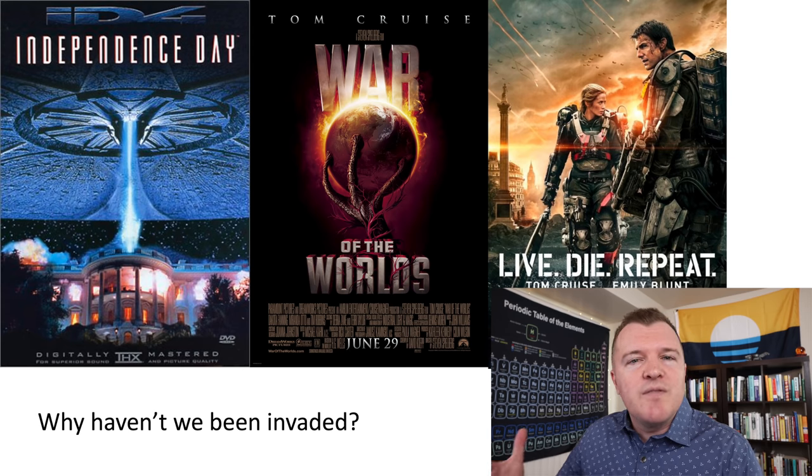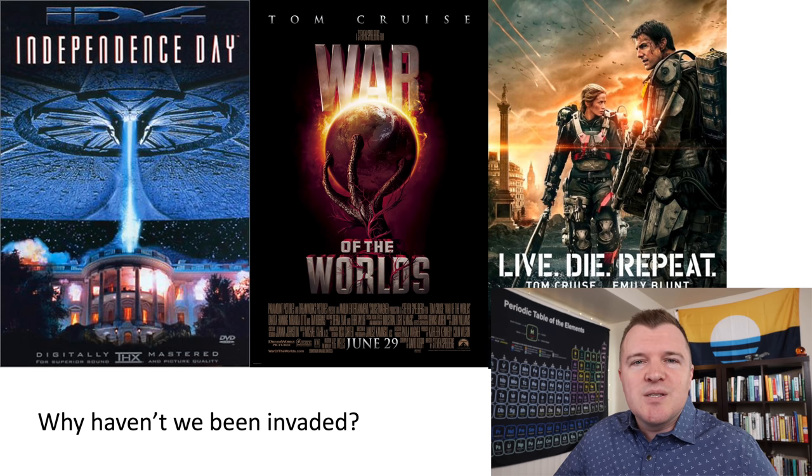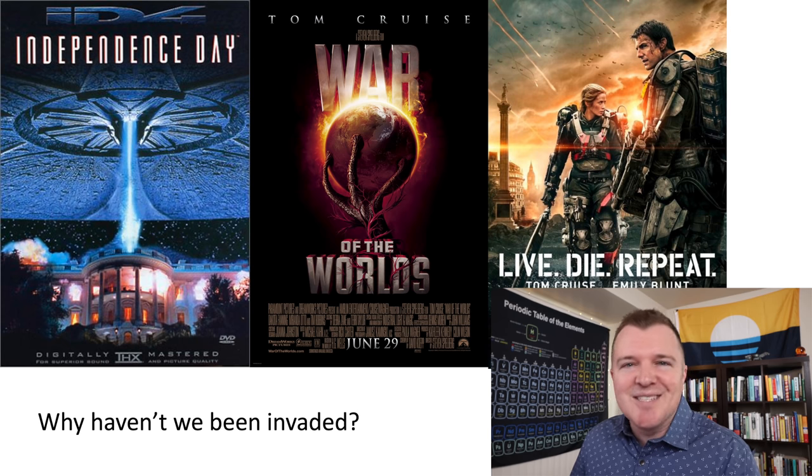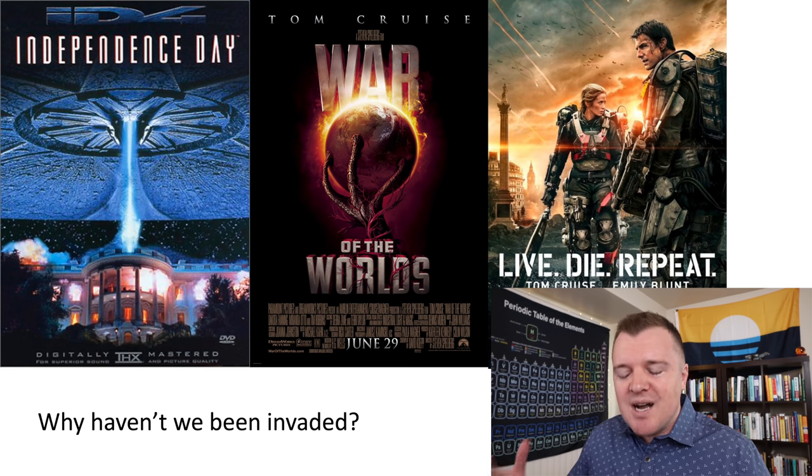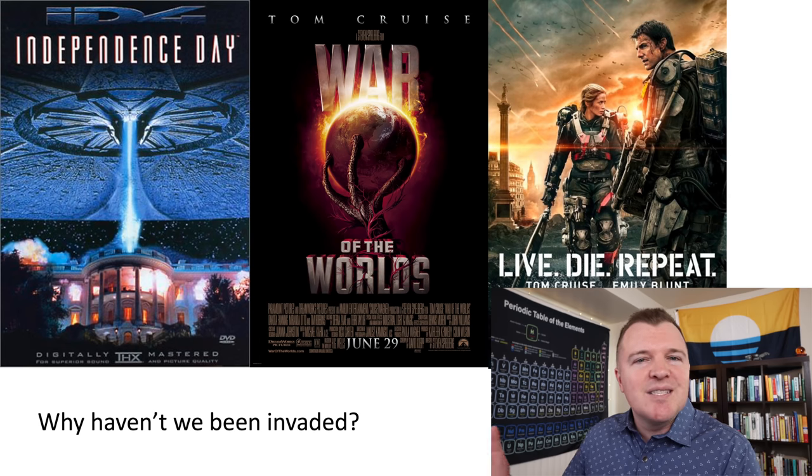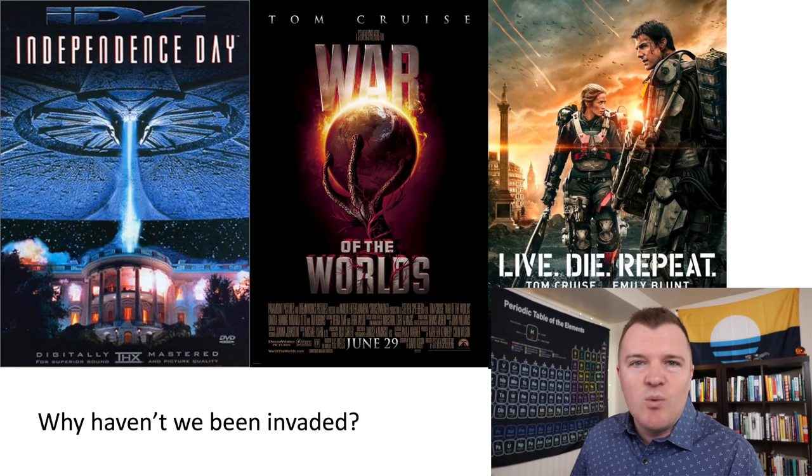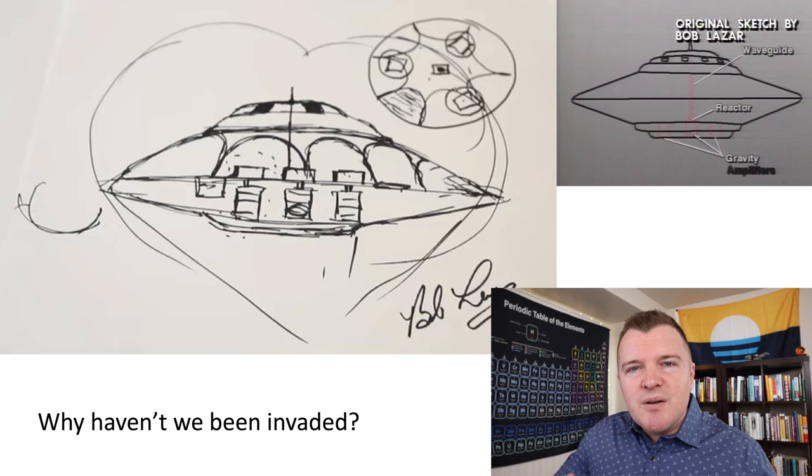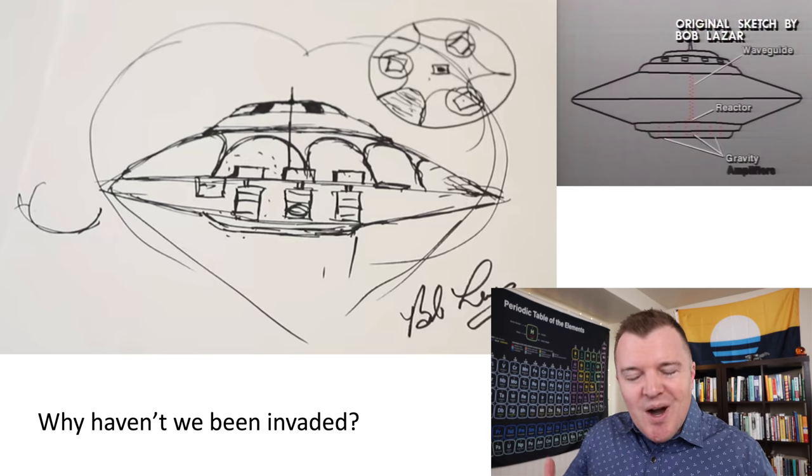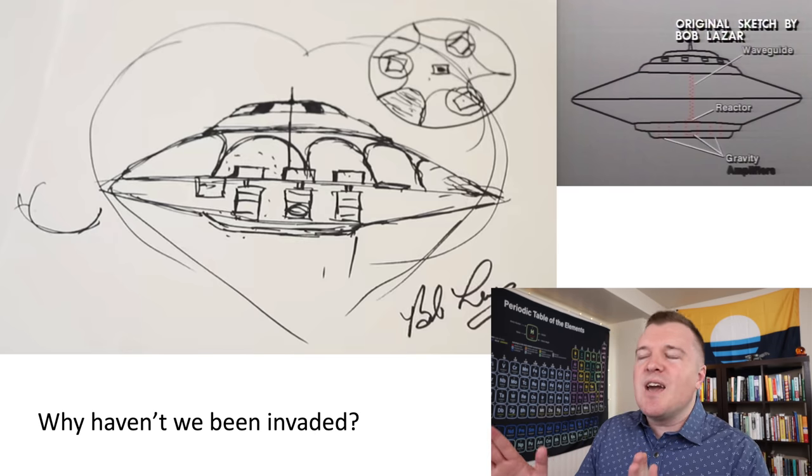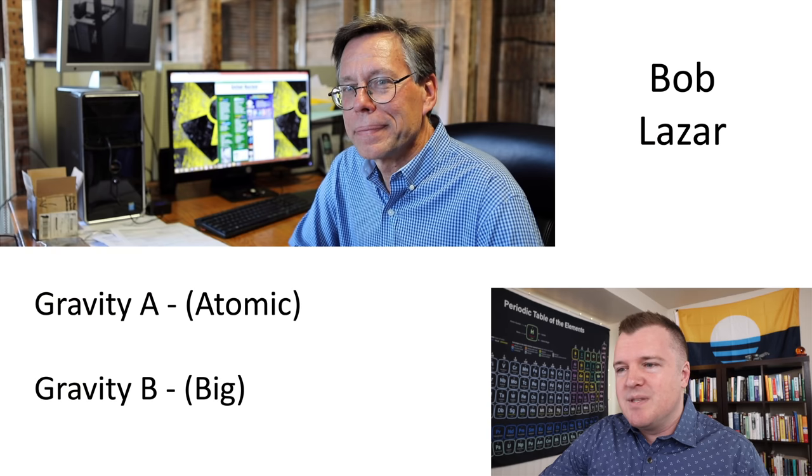If intelligent advanced aliens exist in our galaxy, why haven't they just come here, annihilated us, and taken our planets? There's all these movies like Independence Day, War of the Worlds, Edge of Tomorrow, where we're constantly being invaded by advanced civilizations, alien life forms, basically to wipe us out and then take our planet. Why? Why hasn't this happened? And Bob Lazar's story actually gives a very sensible explanation why they haven't come here.